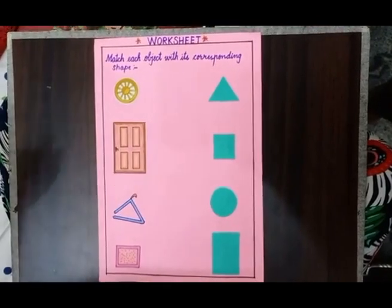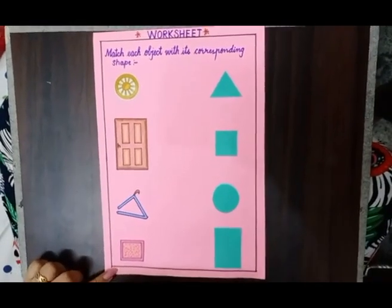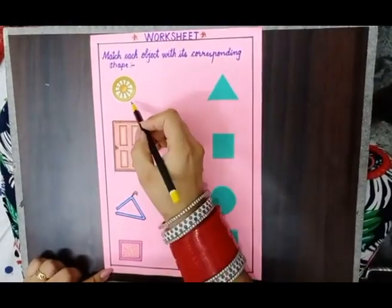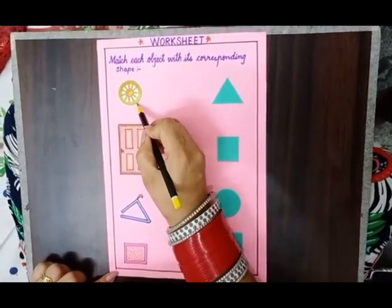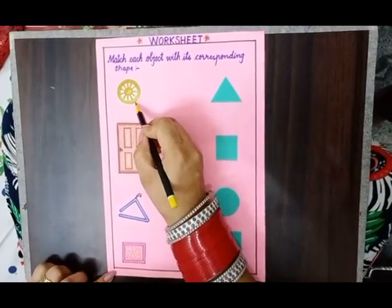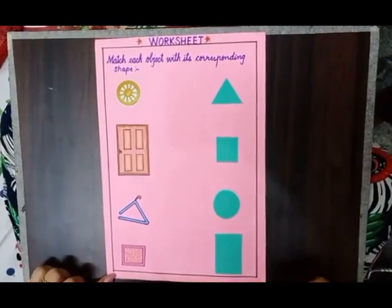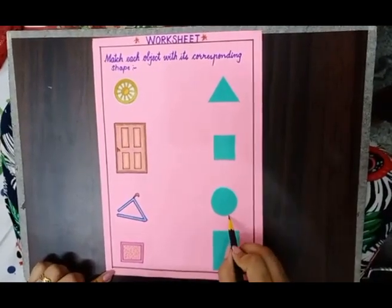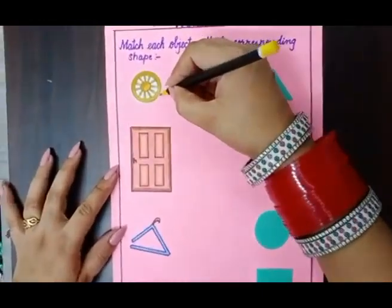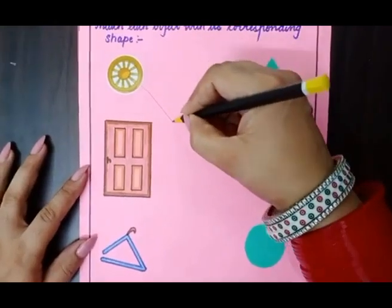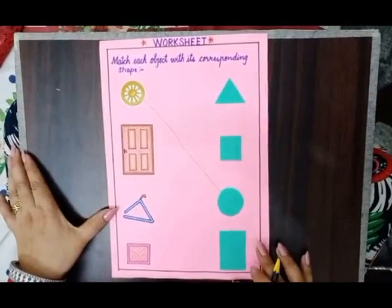This is the picture of a wheel. Do you know what is the shape of a wheel? It is a circle. So find where is the circle here. This is the shape of circle. So you have to match the wheel with its corresponding shape, circle, like this.